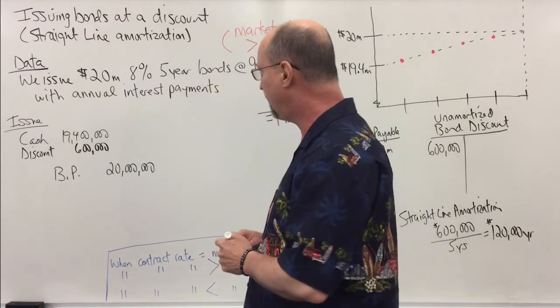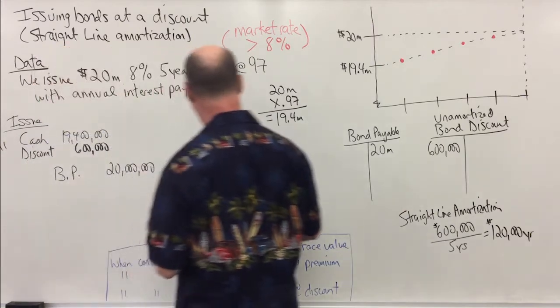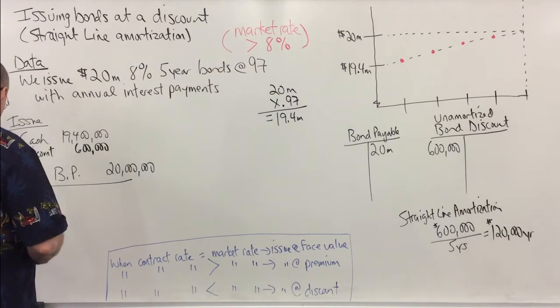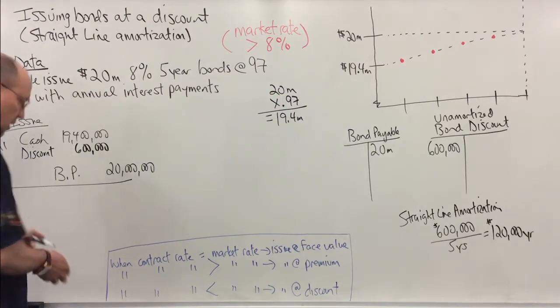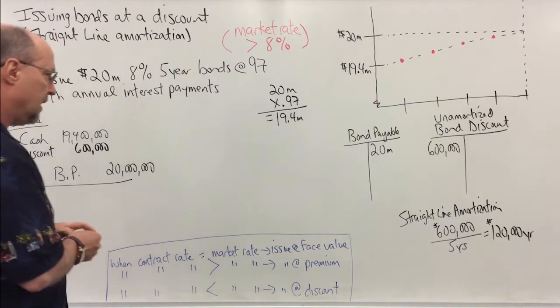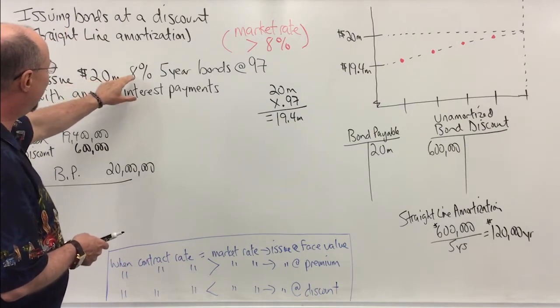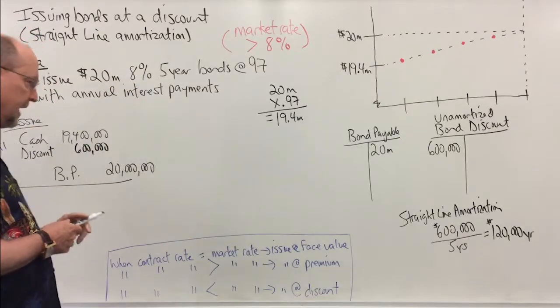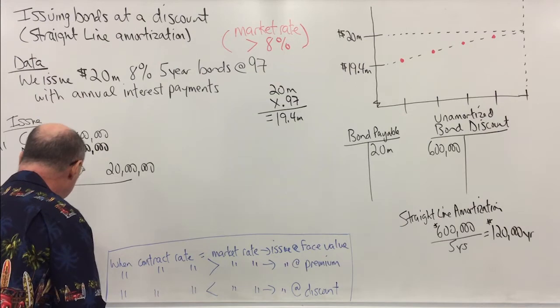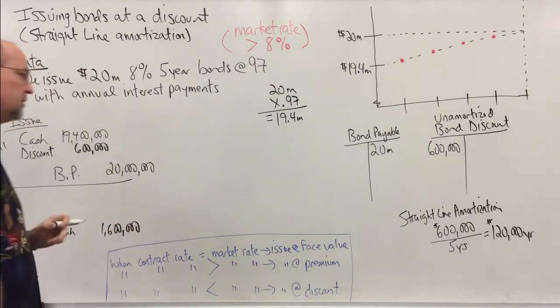Now on December 31st—let's just say we issued the bonds on January 1st to keep life simple—on December 31st, if that's when we pay interest or if we accrue interest either way, then what we're going to do is $20 million times 8%. My interest payment is going to be $1.6 million, so I'm going to credit cash $1 million $600,000.